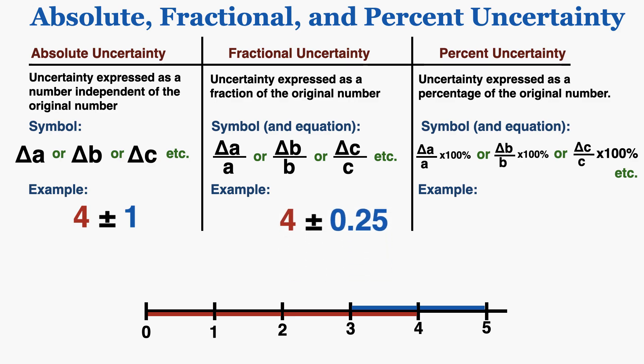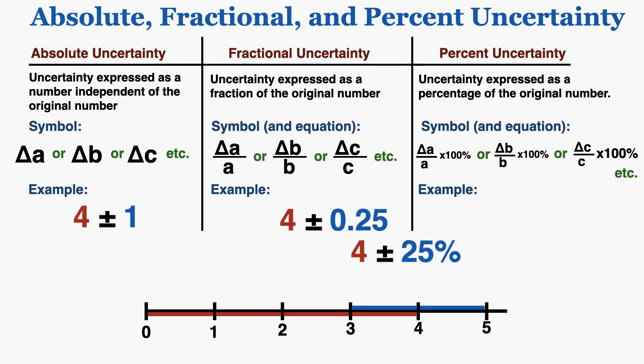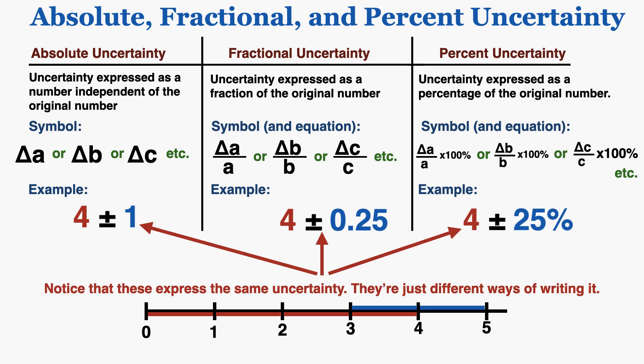Percent uncertainty is uncertainty expressed as a percentage of the original number. If 1 fourth of my measurement is uncertain, that means 25% of my measurement is uncertain. You can see that these expressions all express the same uncertainty — they're all referring to that same red and blue line, just different ways of writing the same uncertainty. So absolute, fractional, and percent uncertainty are three different ways of recording the same fundamental thing.